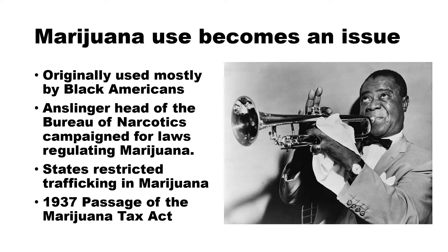Marijuana use became an issue. Originally it was used mostly by black Americans and at that point it wasn't considered a cause for concern. But as the use spread into the white community, it became more of an issue. Anslinger, head of the Bureau of Narcotics, campaigned for laws regulating marijuana, and many states began to restrict trafficking in marijuana. Once prohibition was repealed, there were many people who had been involved in enforcement who now had little to do, so Anslinger pushed to have marijuana made illegal.